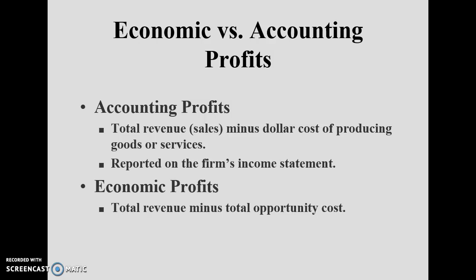When calculating accounting profit, we subtract only explicit costs from total revenue — we do not consider implicit costs. When calculating economic profit, we deduct both explicit and implicit costs from total revenue. For this reason, economic profit is always less than accounting profit, because of the difference represented by implicit costs. In managerial economics, we always consider the economic profit, not the accounting profit.